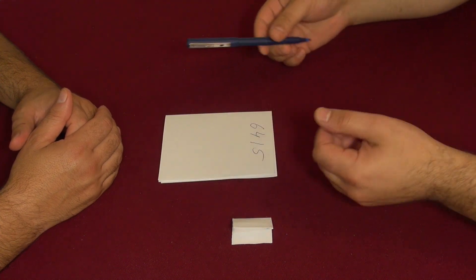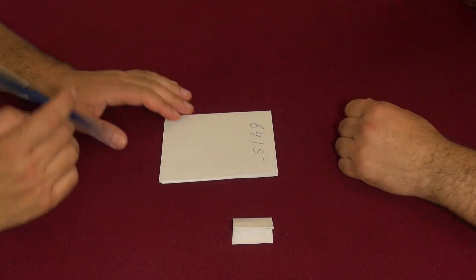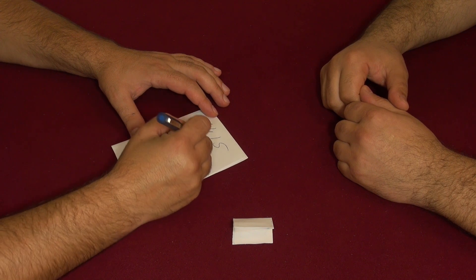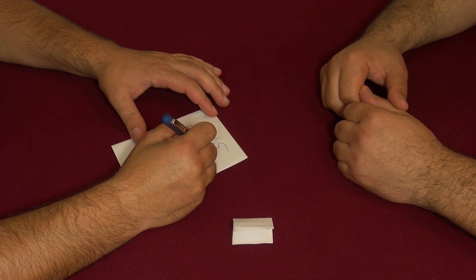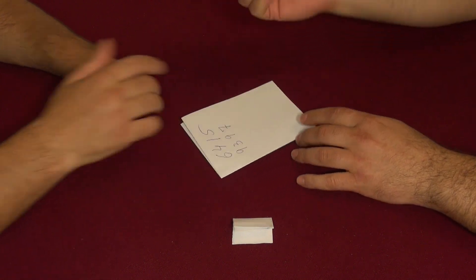Spectator, please write any four-digit number under this number, any four-digit number you wish. It doesn't matter what kind of four-digit number, whatever you want. 3997. Great. So now I'm going to write the number 1602.